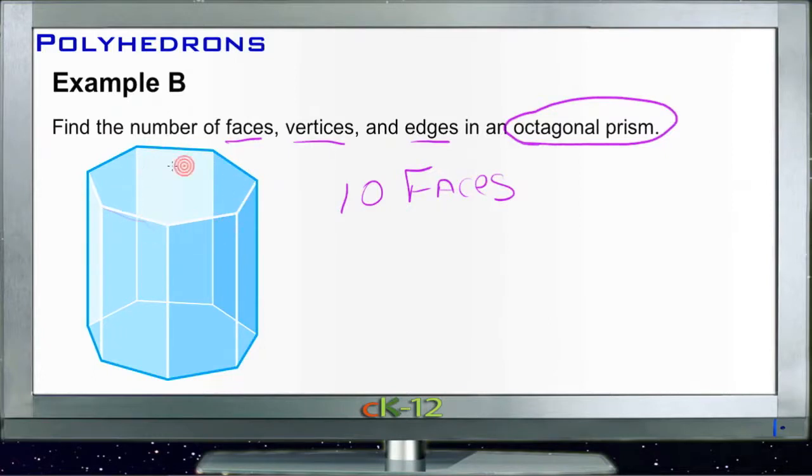If we have eight sides around the top and the bottom, each one of those intersections is one of our vertices. So if there's eight sides, there's going to be eight vertices. We have eight vertices on the top and eight vertices on the bottom, so that's going to give us 16 vertices.